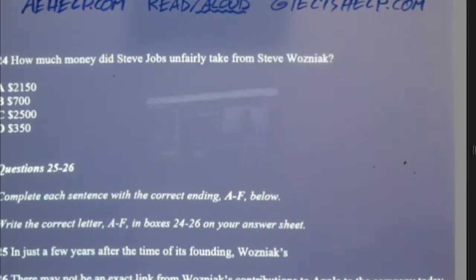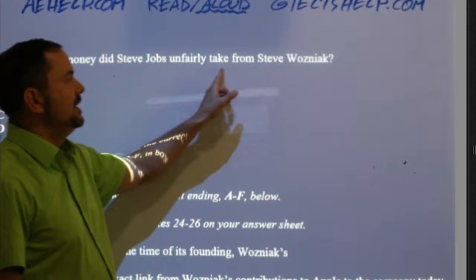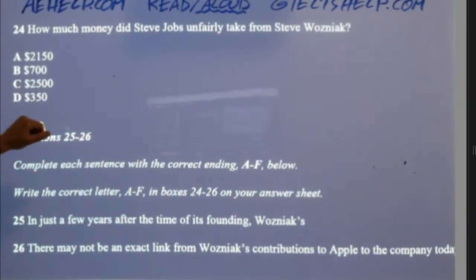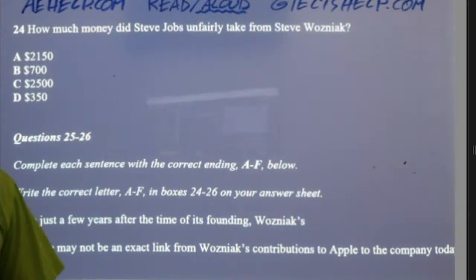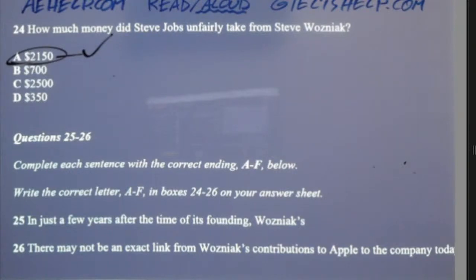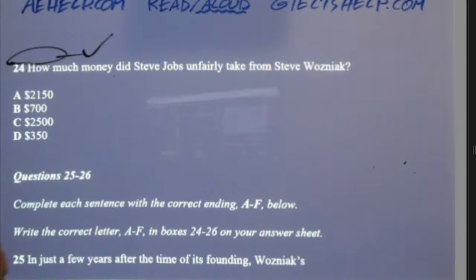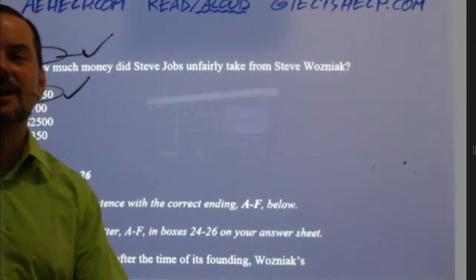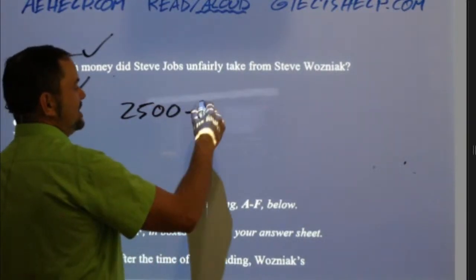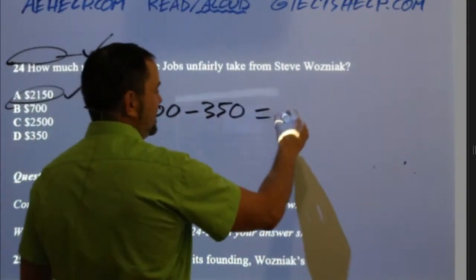Question 24: how much money did Steve Jobs unfairly take from Steve Wozniak? A: $2,150. B: $700. C: $2,500. D: $350. Hassan says $2,500 — no, that's not right. Bumi says A — correct. Why? Jobs should have given $2,500 to Wozniak, but he only gave Wozniak $350, which means that he cheated Wozniak out of $2,150.